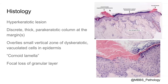This column represents the cornoid lamella, and in some biopsies where you capture the whole lesion, as you can see on the top right image, you see the cornoid lamella on both sides.